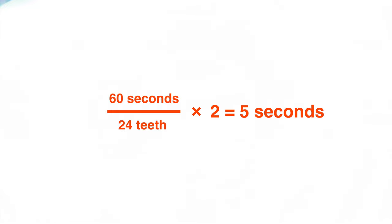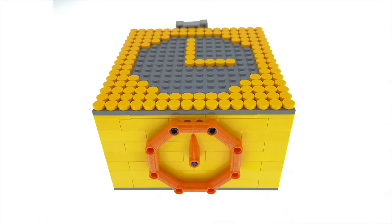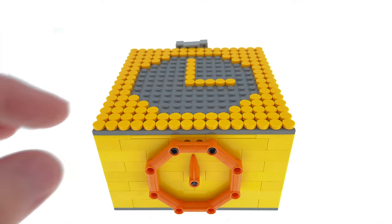So now that we know this, it's sixty seconds divided by twenty-four teeth times two. That is more like it. Therefore, each tooth that moves along or click is five seconds.